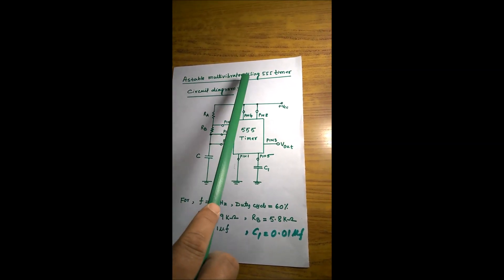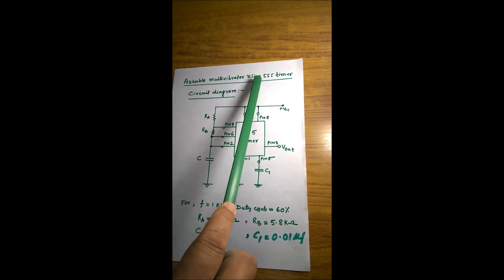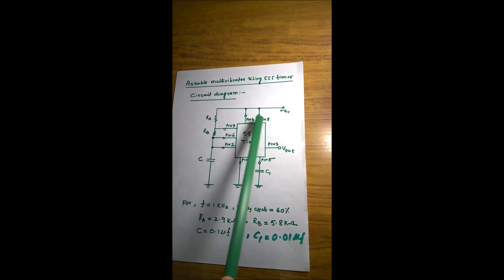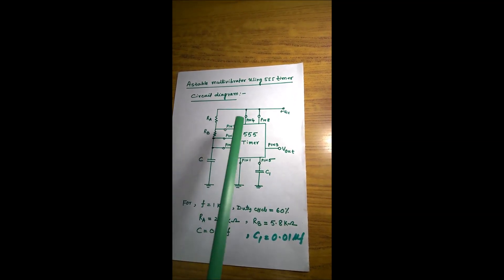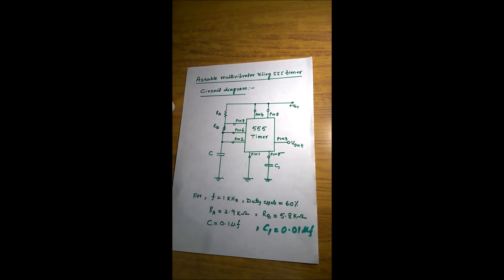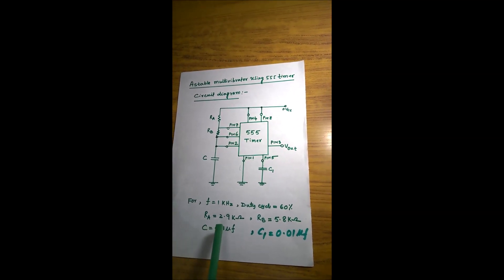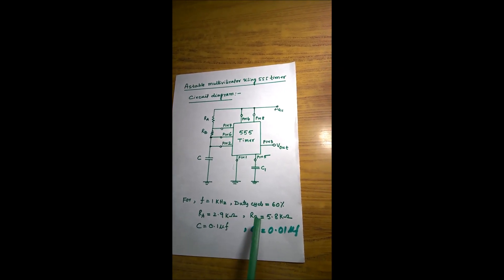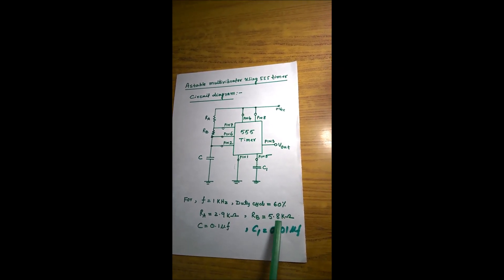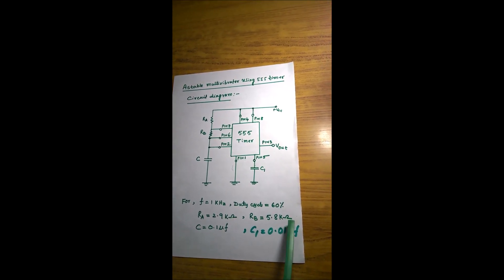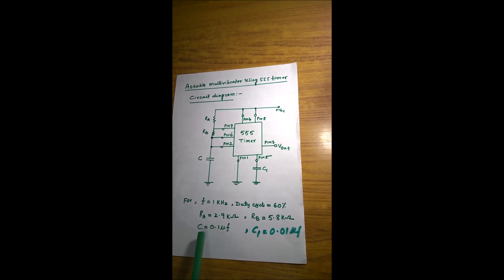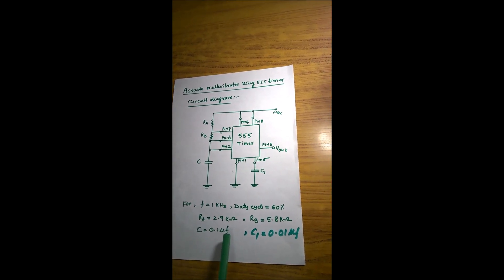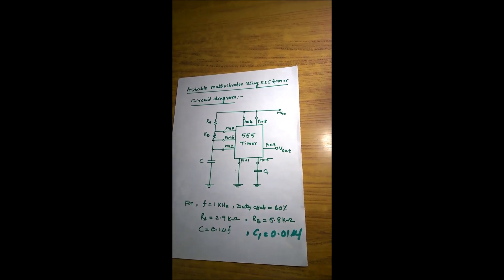Astable multivibrator using 555 timer — this is the circuit diagram. As per the design, we got RA equal to 2.9 kilo, RB equal to 5.8 kilo, and C equal to 0.1 microfarad.